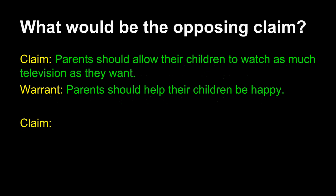What would be the opposing claim to this? How would I construct it? As you might anticipate if you've watched the first few tutorials in this argument series, I start with the same responsible party. Even though this position opposes the original position, it uses a lot of the same language. I'm still talking about parents, and of course I continue with the word "should." So I still begin my claim with "parents should." If you focus on the same sort of beginning for your claim and warrant, then you'll be fine with your opposing position.